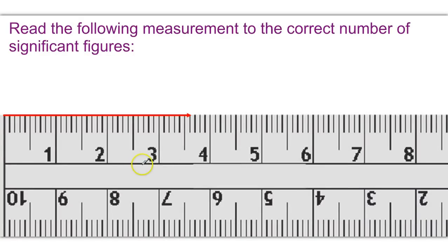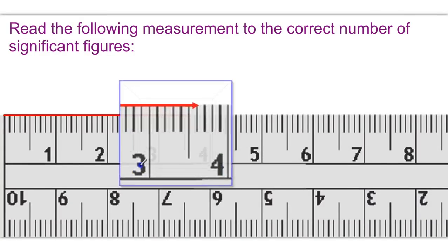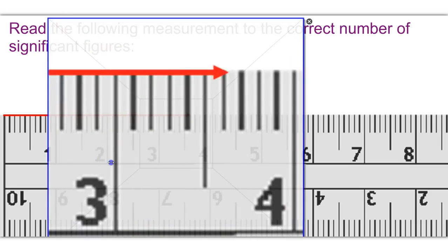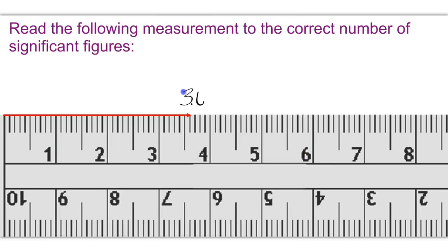So I read the following measurement to the correct significant figures. So if we get a closer look here, we know for sure that it's 3. And if we read forward, we have 3.6 is what we can be certain of, and now we need to estimate one more value between the lines. And so this would be 3.63, roughly. So this ruler is accurate to a minimum of two decimal places.